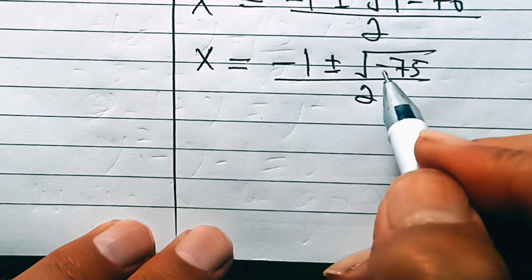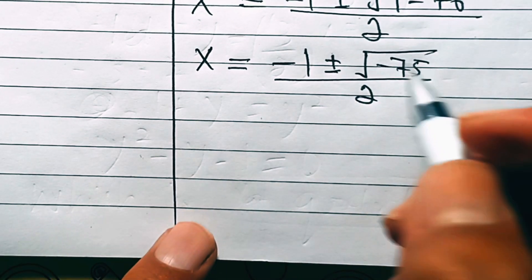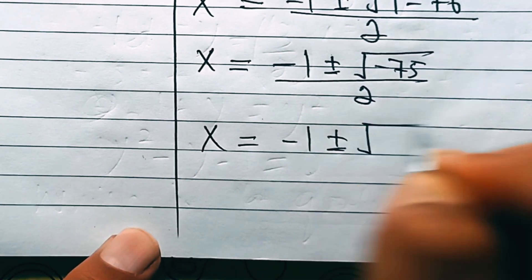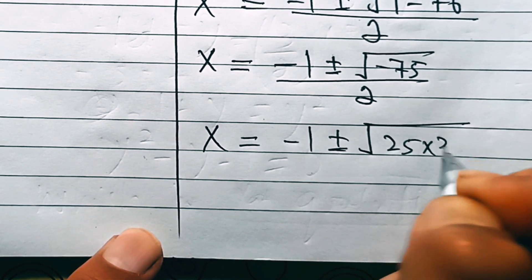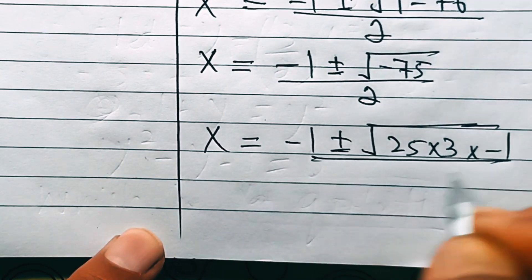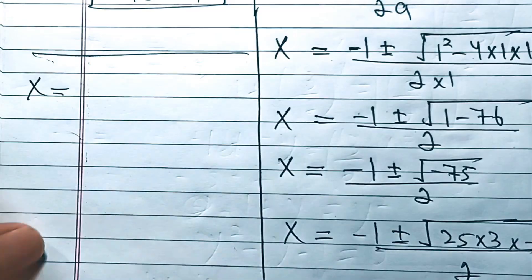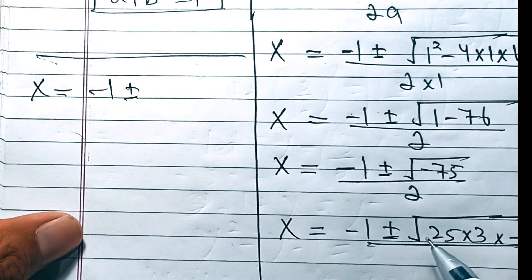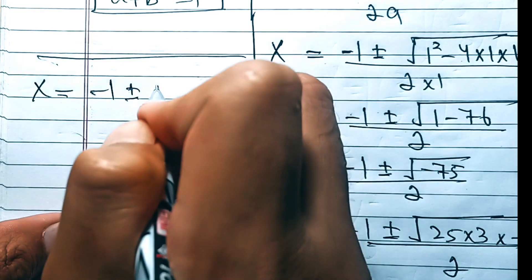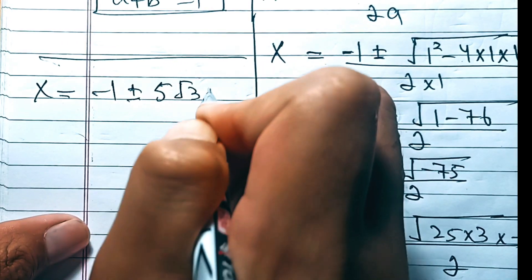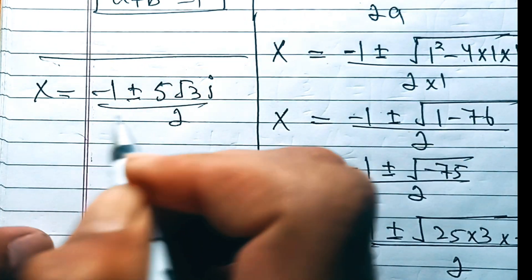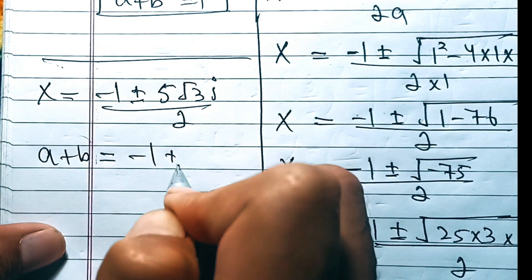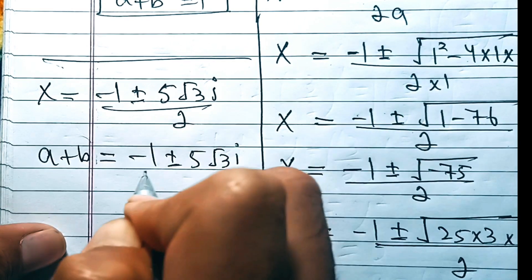Now, minus 75 can be expressed as 25 times 3 times minus 1. So x equals minus 1 plus or minus the square root of (25 times 3 times minus 1) over 2. The square root of 25 is 5 and the square root of minus 1 is iota (i), so we can write this as x equals minus 1 plus or minus 5√3·i divided by 2. Since x equals (a+b), we get a + b equals (minus 1 ± 5√3·i) over 2.